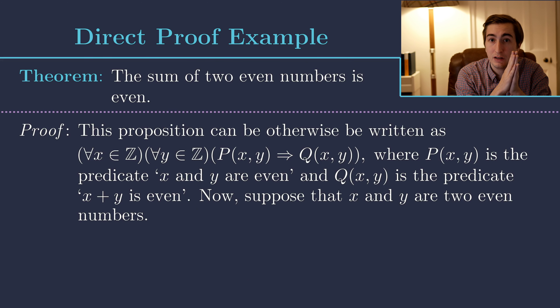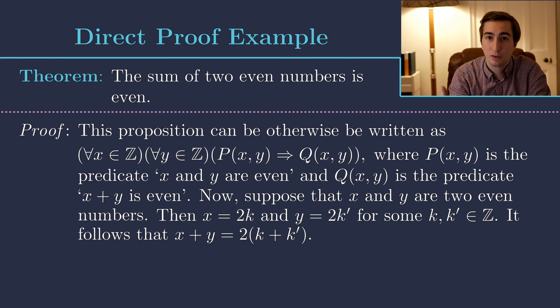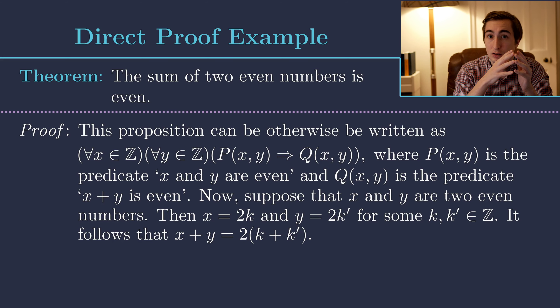Given that, how do we prove this statement directly? We assume P(x,y) is true — that is, we assume there are some values x and y that are both even. By the definition of even numbers, both numbers are divisible by two, so we can write them as x = 2k and y = 2k' for some k and k' in ℤ. That just follows from the definition of even numbers.